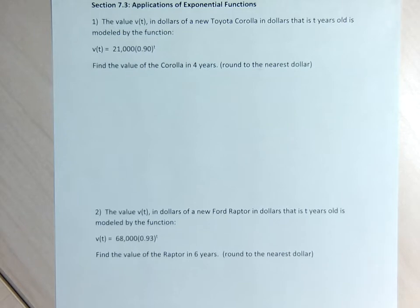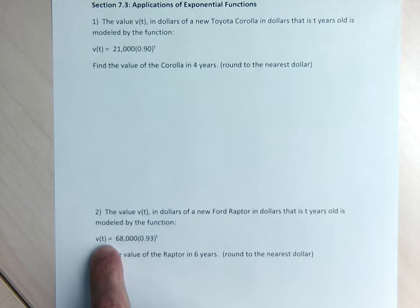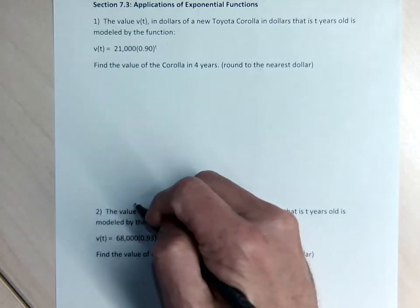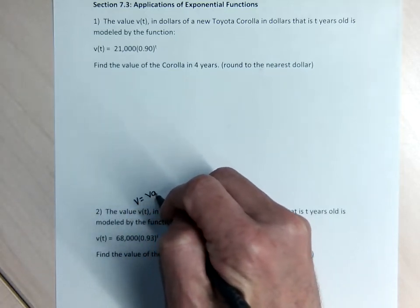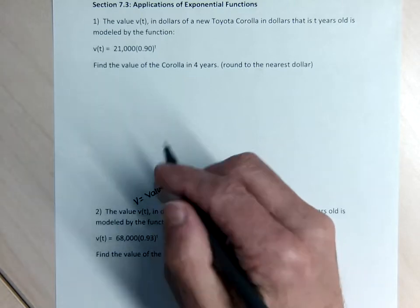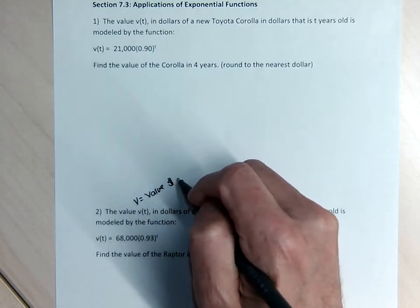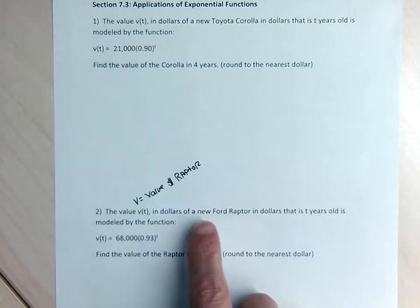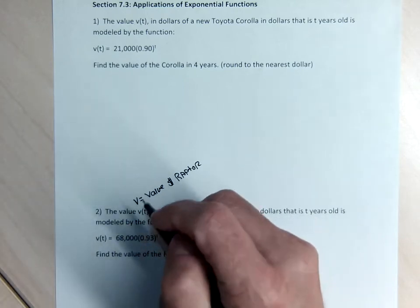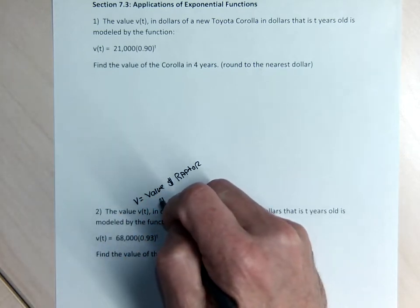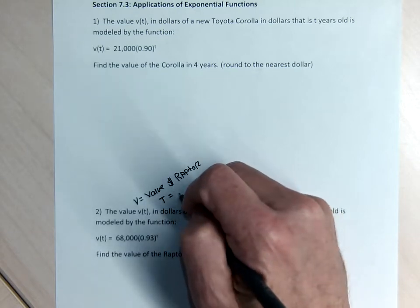I'll start with number two. I created an equation in function notation as opposed to XY notation. If I read the problem, it says the value — this V in the formula means the value in dollars of a new Ford Raptor. So the V is the value in dollars of a Raptor, which is a kind of Ford truck. It says the value V of T in dollars of a new Ford Raptor that is T years old. This notation, V of T — the V stands for the value and the T inside the parentheses is the age of the truck.